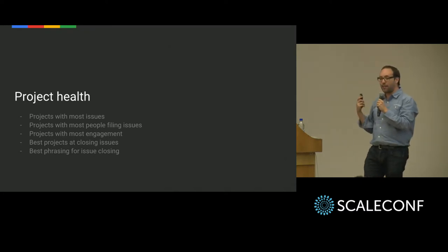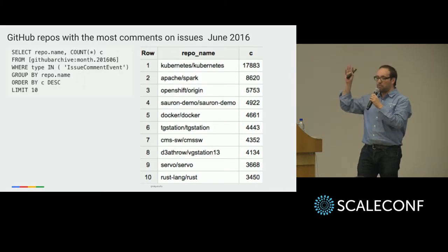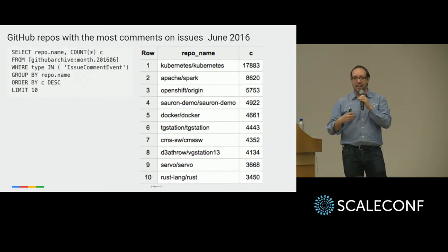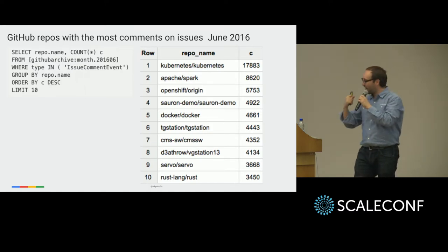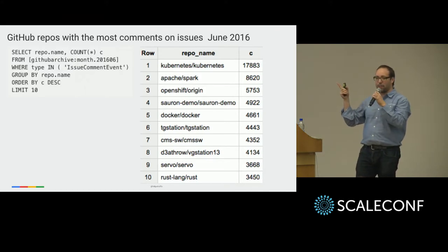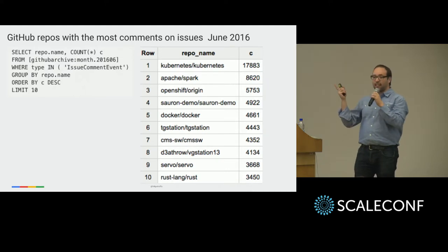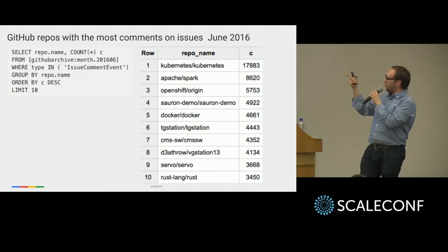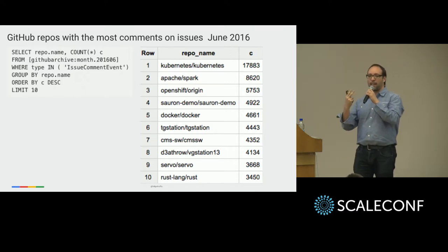Project health — are my projects healthy? During June 2016, these are the projects that got the most number of comments on issues. On top, Kubernetes, followed by Spark, OpenShift, and a project called Sauron Demo. Who knows Sauron Demo? Always question the results you get. In this case, almost 5,000 comments on Sauron Demo were given by one user — a robot.